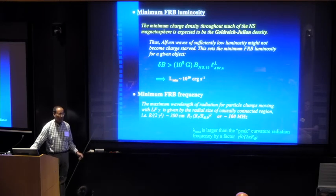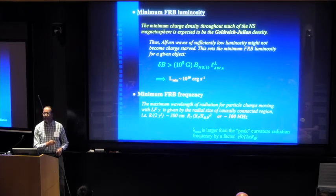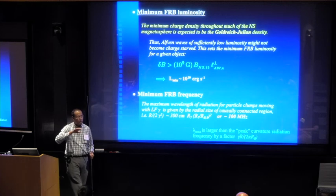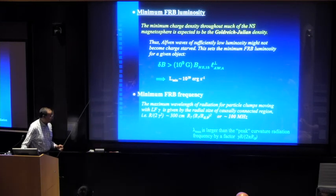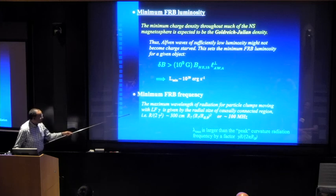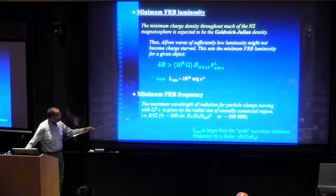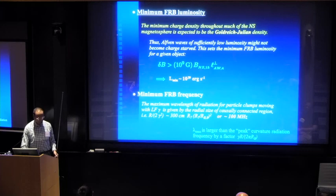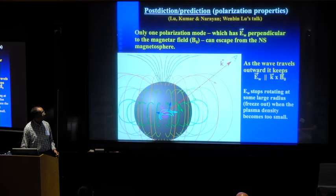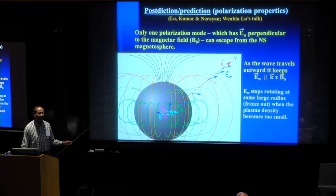There is a minimum frequency. That's just set by the causality argument, simple causality. The largest wavelength that we should see, or the smallest frequency that we should see, is something on the order of 100 megahertz. Which is also an interesting number for observers to check.